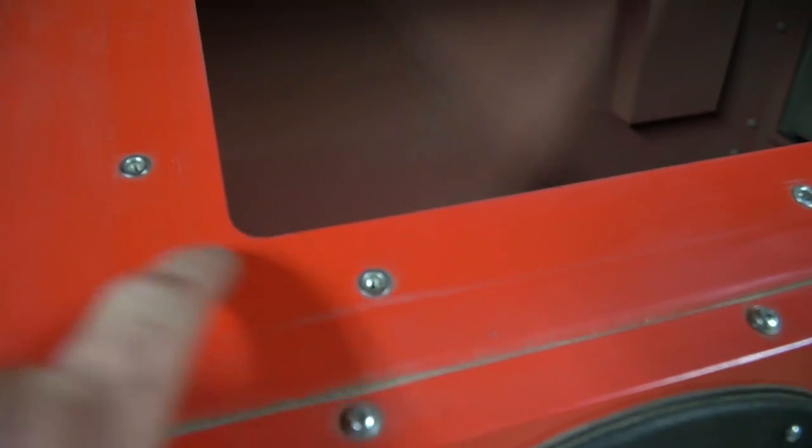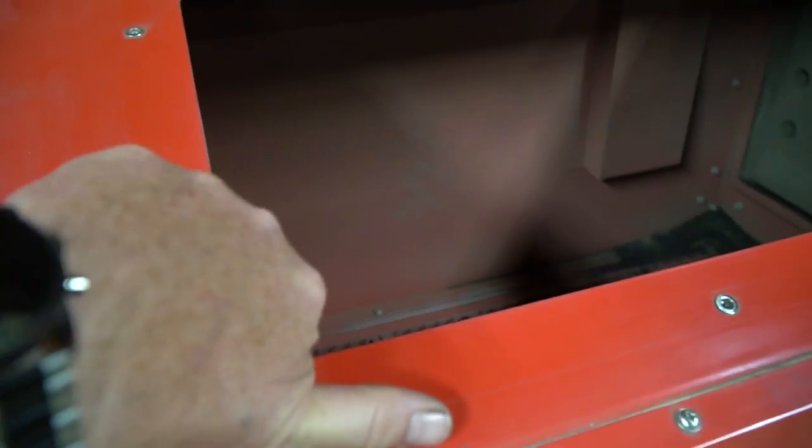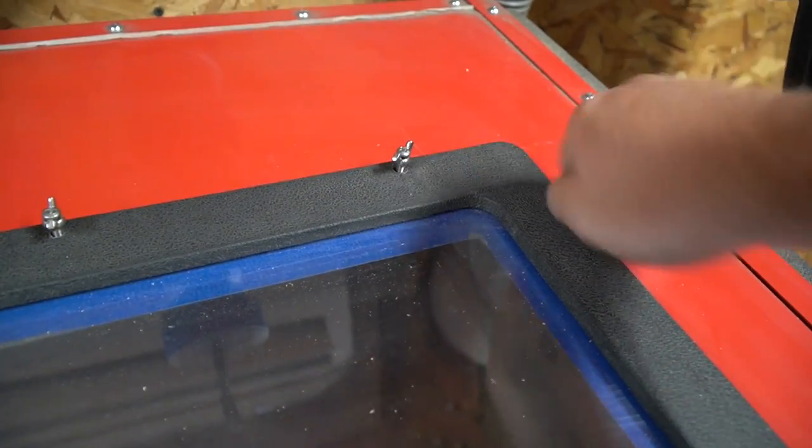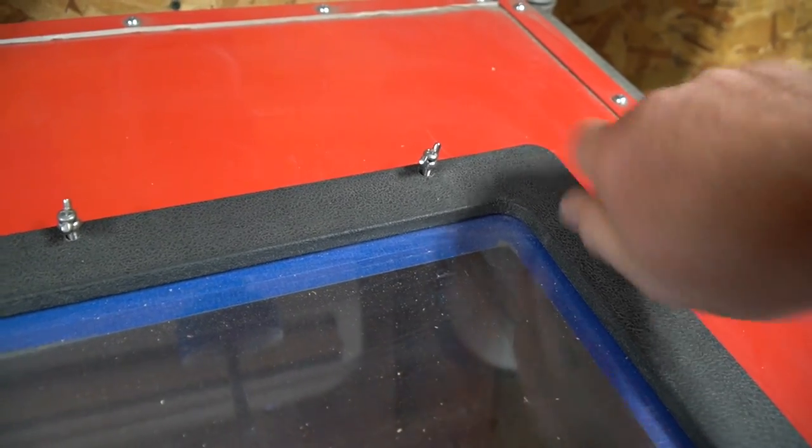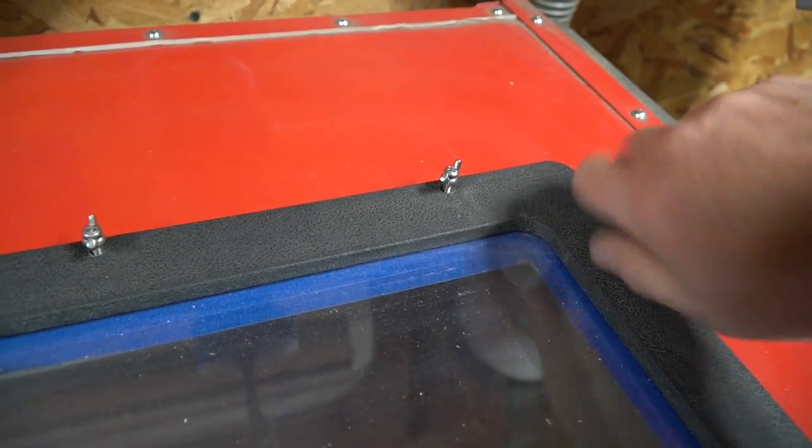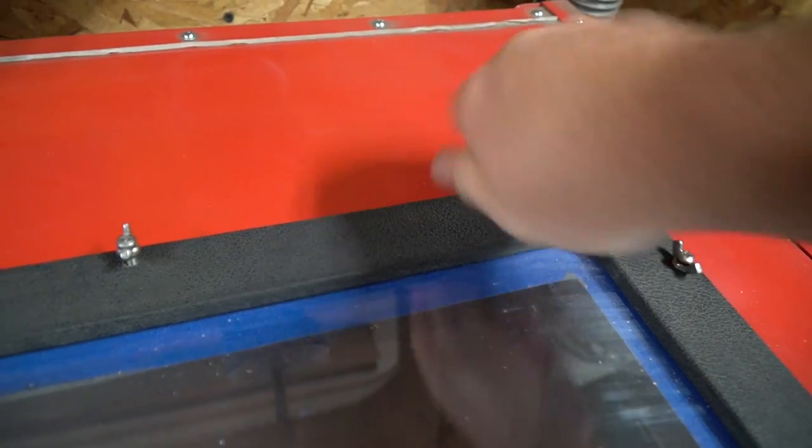So what I did is I used the nutserts. They're threaded nutserts and now I can use a screw from the top and not have to worry about holding the nut on the bottom of the cabinet. So as you can see that makes changing the screen protector on the bottom side of this piece of glass really easy because I can just screw these in and not worry about a nut on the bottom side.